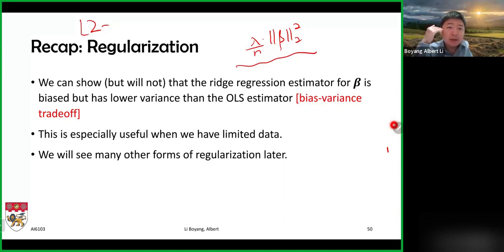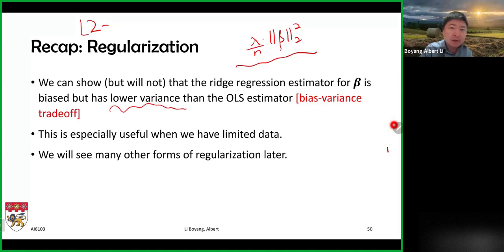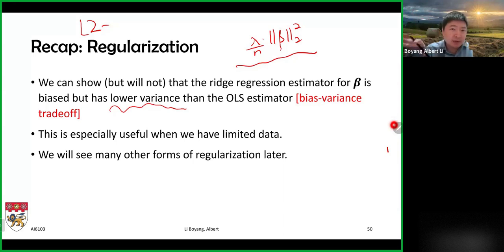It turns out that if you do mathematical analysis, the ridge regression estimator for beta has lower variance than the OLS estimator. It will also be biased, so there is a bias-variance tradeoff. In some cases we prefer lower variance — especially when we have little data — because the variance of an estimator is often associated with how much data we have.